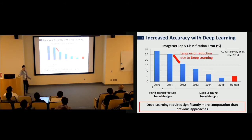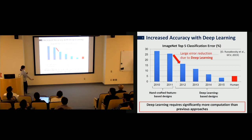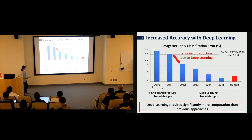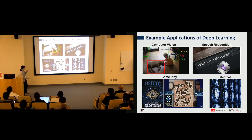While this is very impressive and explains why people are excited about deep learning, it comes with a significant trade-off: it requires much more computation than previous approaches. Deep learning has already seen wide use in industry — from computer vision to speech recognition, to AlphaGo beating the world champion at Go, to medical applications.